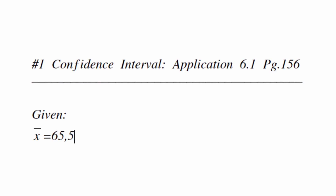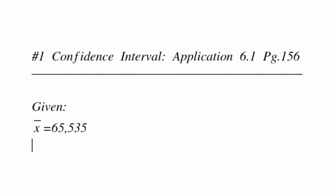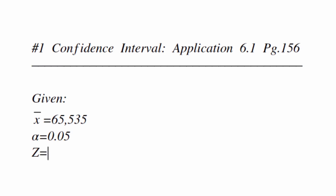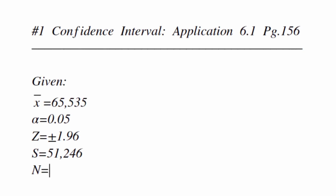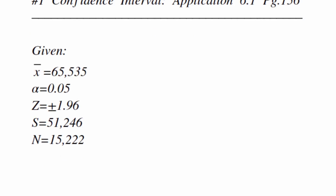Step 1: Let's write down our givens. X-bar equals 65,535. Alpha equals 0.05. Our z-score is 1.96. S equals 51,246. And n equals 15,222.